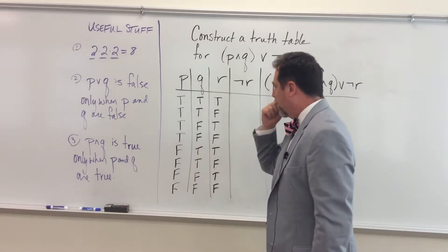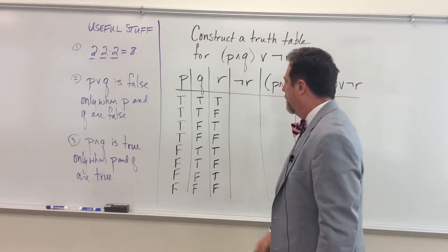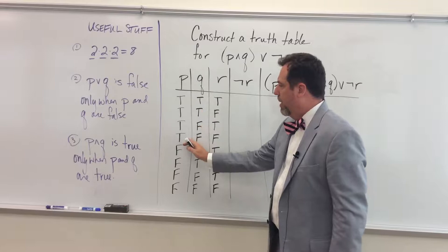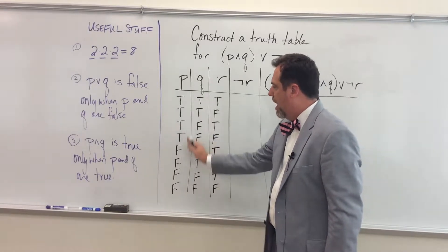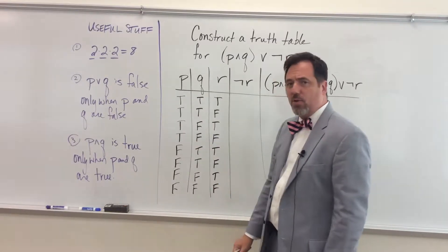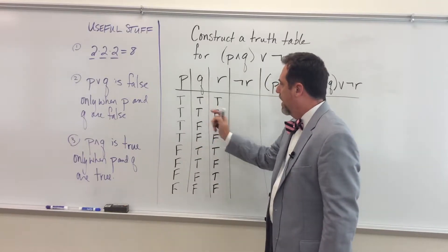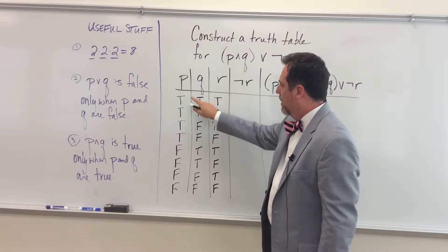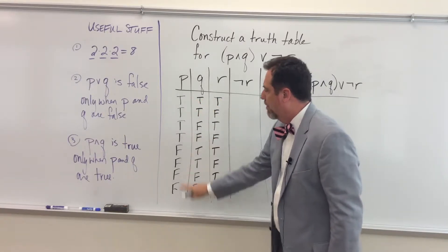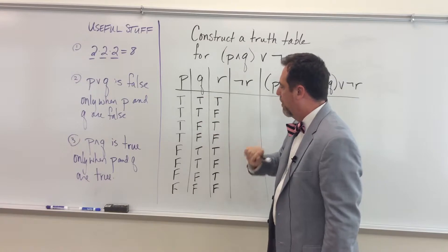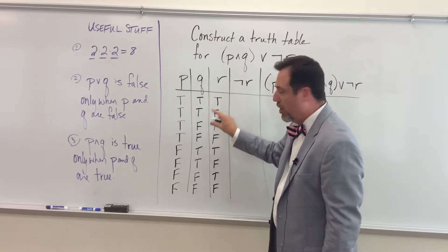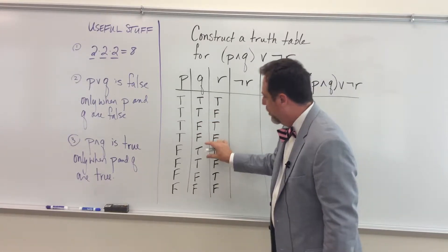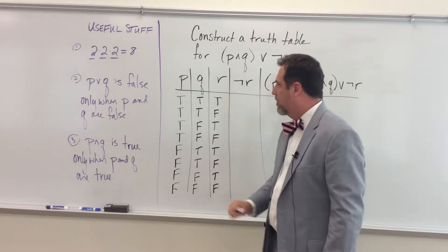I already put in the possible truth values in the normal way. I do half true, half false in the first column. And then I take that in half, so instead of four true and four false, I do two true, two false, two false, two true, two false.